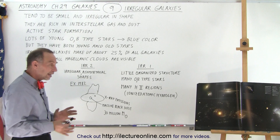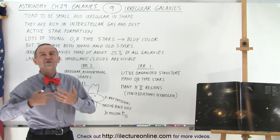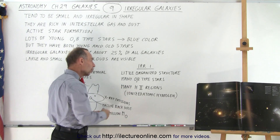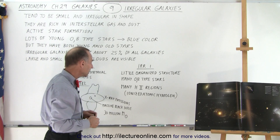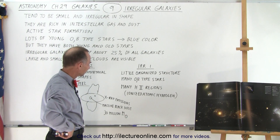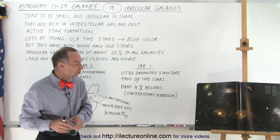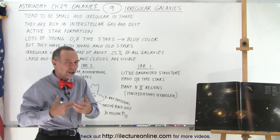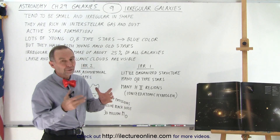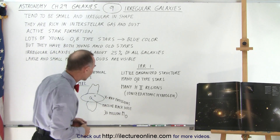We divide irregular galaxies into two groups: IRR1 and IRR2. The IRR1 are the more typical irregular galaxies — there's little organized structure, it's basically a blob of stars. There are many O and B type stars so lots of star formation is taking place, and there are many what we call H2 regions. H stands for hydrogen and the 2 indicates that it's ionized, so there's a lot of ionized atomic hydrogen caused by the UV radiation from the O and B type stars. That's very typical for IRR1 type galaxies.